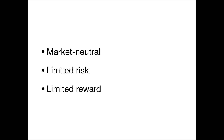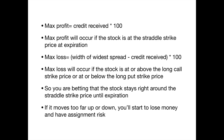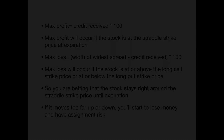The nice thing is this trade has limited risk and limited reward — you know the most you can make and you don't have to worry about waking up to a nasty surprise. Max profit is calculated by taking the credit received — $13.25 times 100 — which equals $1,325. That max profit occurs if the stock is right at the short straddle strike price at expiration. Max loss is calculated by taking the width of the widest spread, subtracting the credit received, and multiplying by 100.